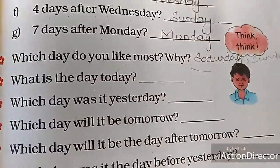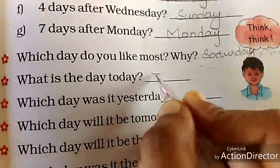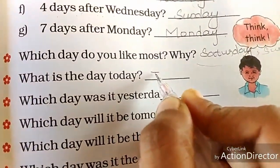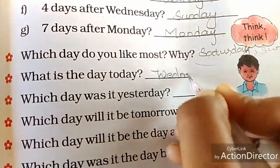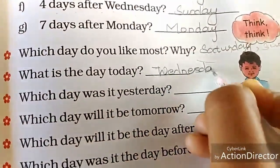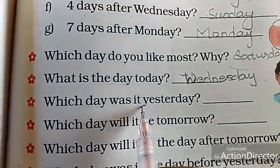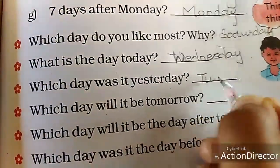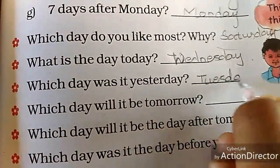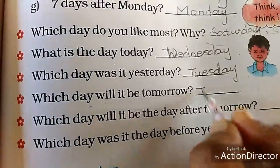What is the date today? Today is Wednesday. Which day was it yesterday? Yesterday was Tuesday. Which day will it be tomorrow? That is Thursday.